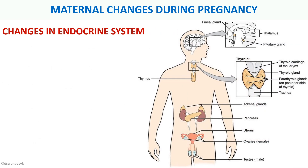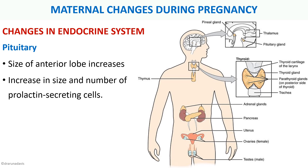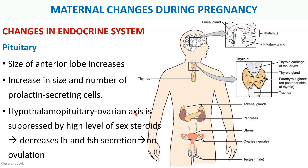In the endocrine system, the size of the anterior lobe of the pituitary gland increases, with an increase in the size and number of prolactin-secreting cells — prolactin being very important for pregnancy and lactation. Additionally, the hypothalamo-pituitary-ovarian axis is suppressed due to high levels of sex steroids, resulting in decreased LH and FSH, and thus no ovulation during the pregnancy period.